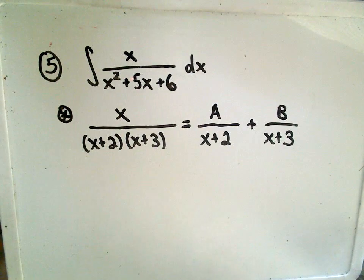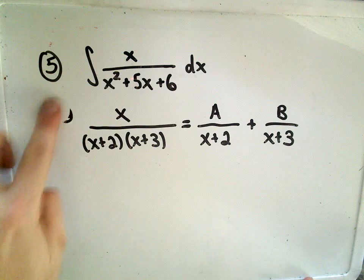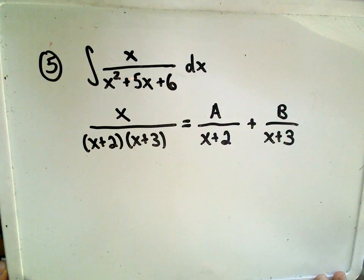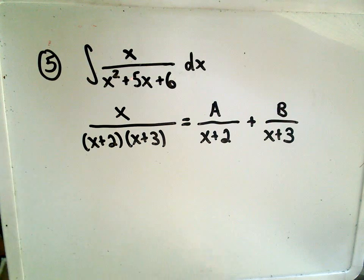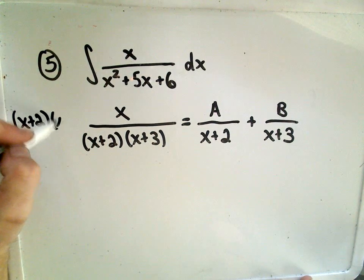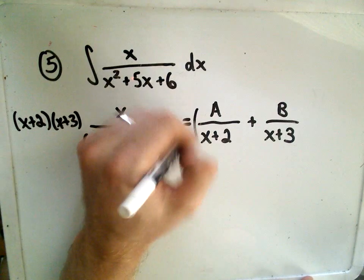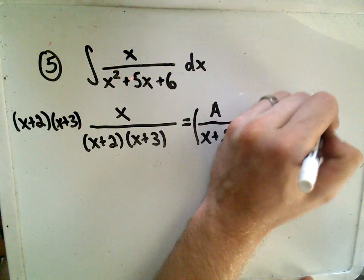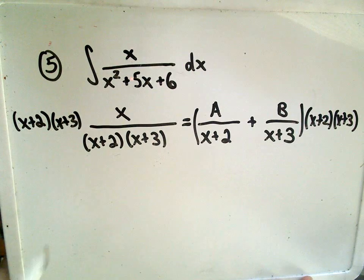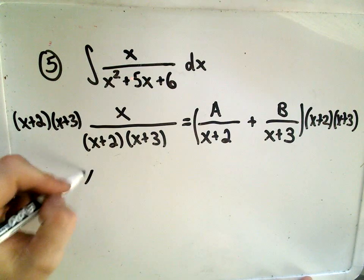Our goal is simply to solve for that. I'm going to go through partial fractions a little faster. I assume if you're watching this video that you've seen partial fractions before. So I'm going to multiply both sides by the denominator, x plus 2, x plus 3. On the left side, everything cancels out. I'm just left with x.